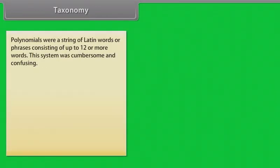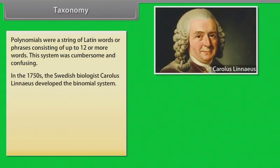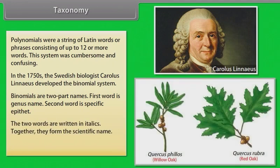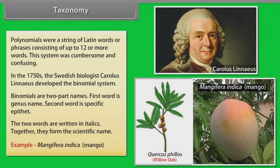Polynomials were a string of Latin words and phrases consisting of up to 12 or more words. This system was cumbersome and confusing. In the 1750s, the Swedish biologist Carlos Linnaeus developed the binomial system. Binomials are two-part names: the first word is the genus name, and the second word is the specific epithet. The two words are written in italics and together they form the scientific name. Example: Mangifera indica — mango.